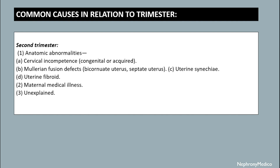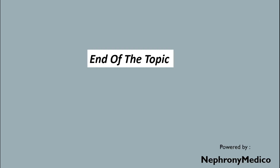In the second trimester, common causes for abortion include anatomic abnormalities, cervical incompetence which may be congenital or acquired, Müllerian fusion defects like bicornuate uterus and septate uterus, uterine synechiae, uterine fibroid, maternal medical illness, and unexplained conditions.